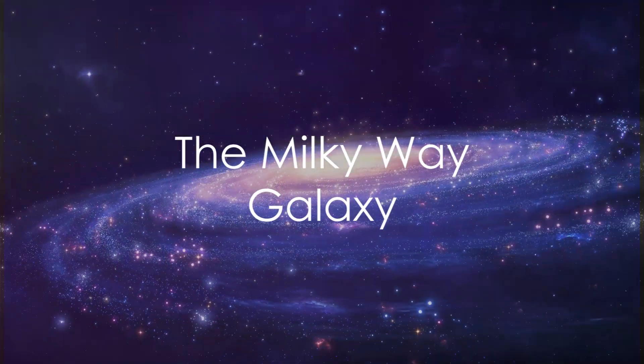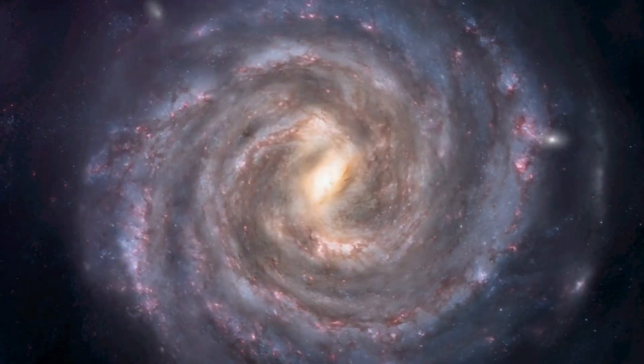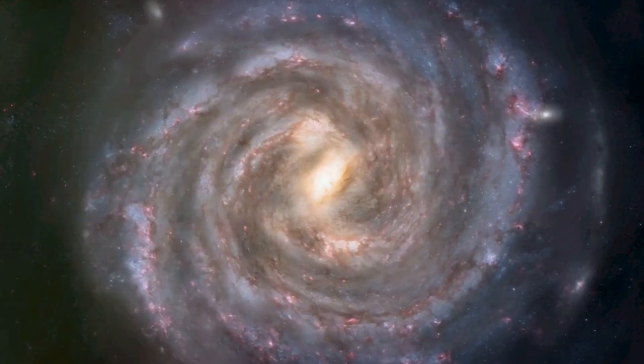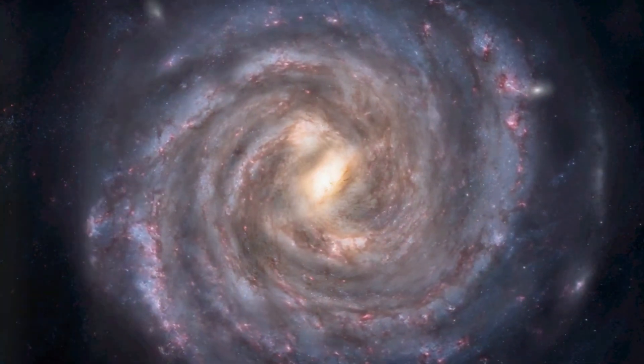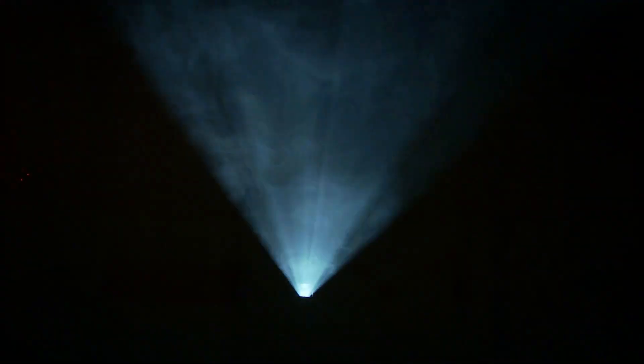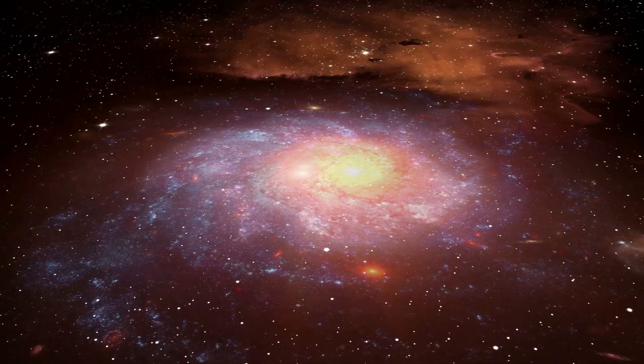Venture further still, and you'll find our home galaxy, the Milky Way. Imagine a sprawling cosmic city, home to hundreds of billions of stars, each with their own planetary systems. This is the Milky Way, our galactic neighborhood. It's an immense, spiraling disk, roughly 100,000 light-years across. That's so vast, even light, the fastest thing in the universe, would need 100,000 years to cross from one side to the other.